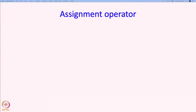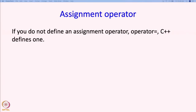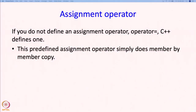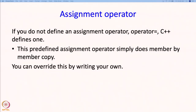We talked about assignments for structs — you should think of that as an assignment operator that C++ predefines for you. This predefined assignment operator simply does member-by-member copy, which is what you were used to before this discussion of member functions. You can overwrite this by writing your own assignment operator, just as we defined the plus operator, you can define operator equals.